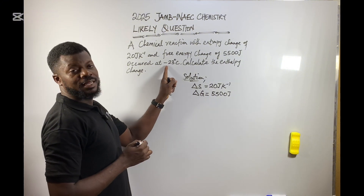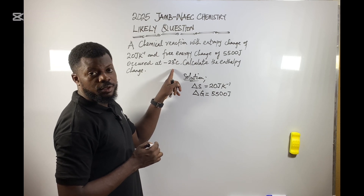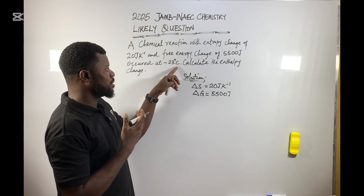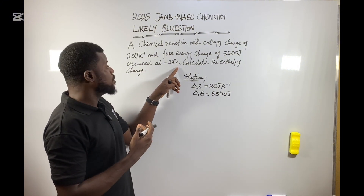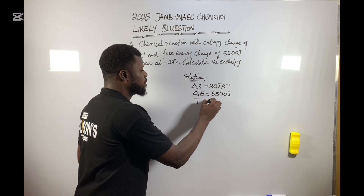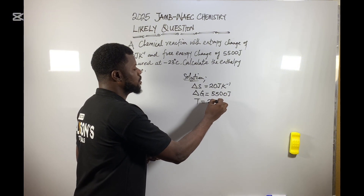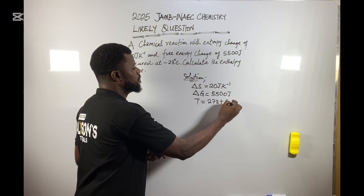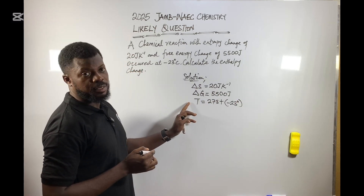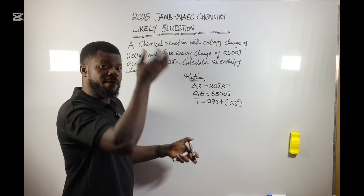The reaction occurred at negative 23 degrees Celsius. Since the temperature is in Celsius, we need to convert it to the Kelvin scale. To achieve that, the temperature in Kelvin will be equal to 273 plus the value in Celsius, so 273 plus negative 23 degrees.